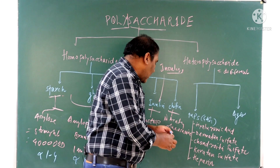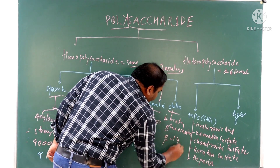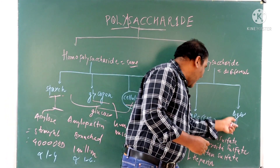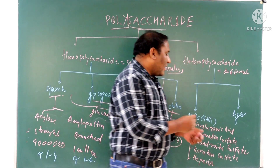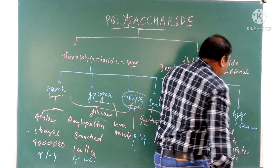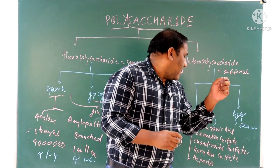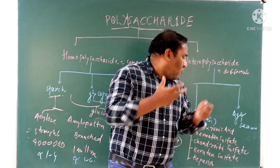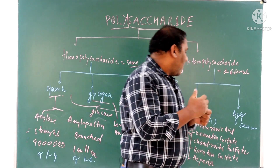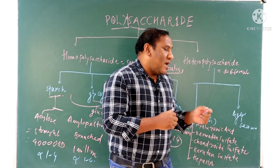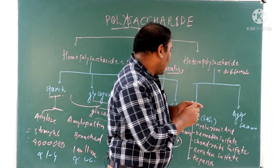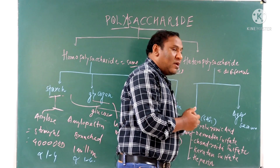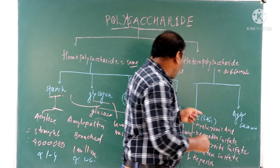Chitin is present in insects and is a polymer of N-acetylglucosamine joined by beta-1,4 glycosidic bonds. In heteropolysaccharides, examples include agar and mucopolysaccharides. Agar is obtained from seaweeds and is composed of glucose, galactose, and other molecules. When agar is dissolved in water, boiled, and cooled, it forms a gel-like structure. Agar cannot be digested by bacteria, so it acts as a supporting medium for bacterial culture and electrophoresis.